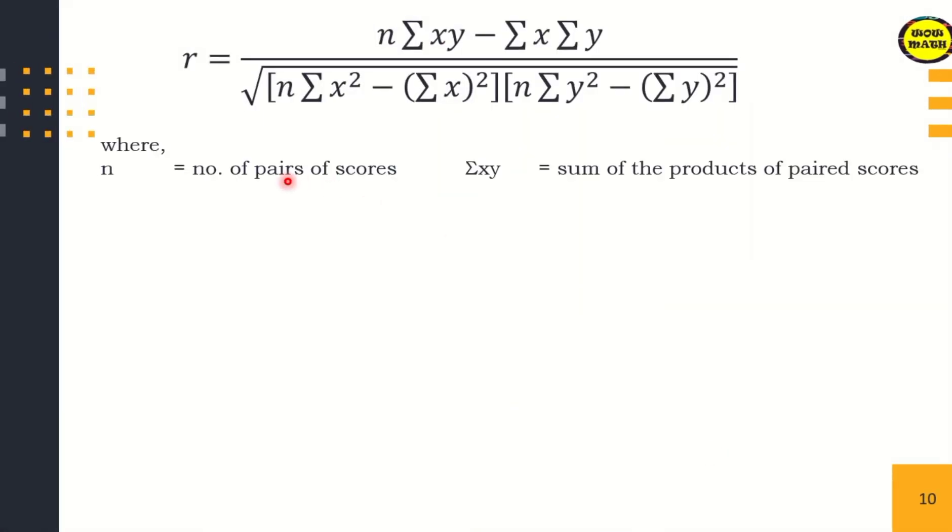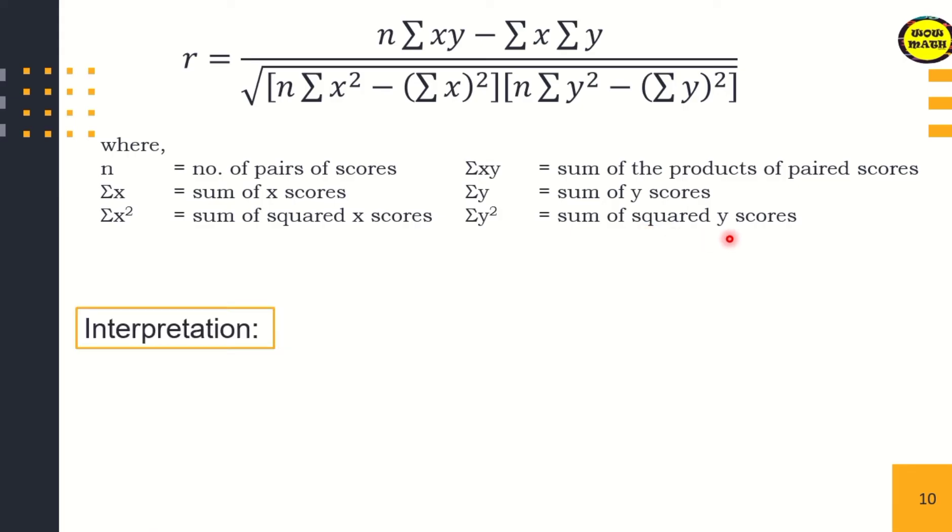N stands for the number of pairs of scores. Summation of XY is the sum of the products of paired scores. Summation of X is the sum of X scores. Summation of Y is the sum of Y scores. Summation of X squared is the sum of squared X scores, and summation of Y squared is the sum of squared Y scores.